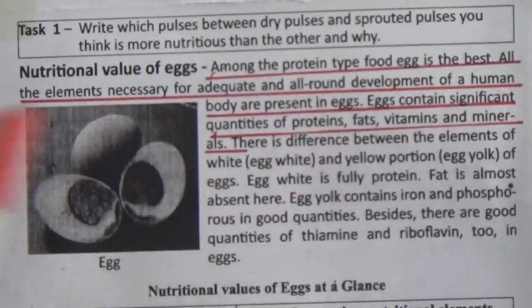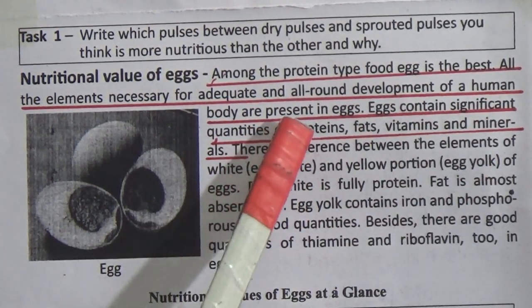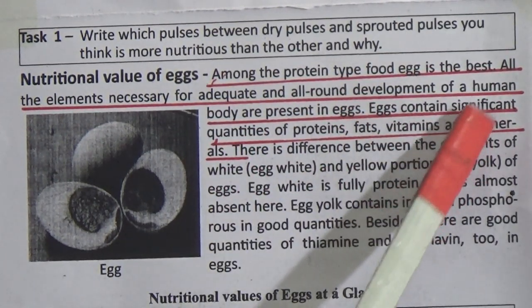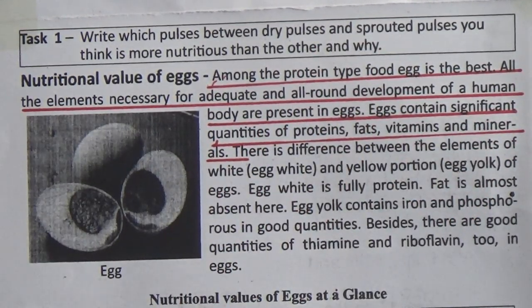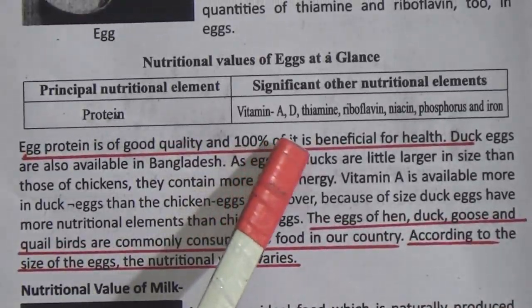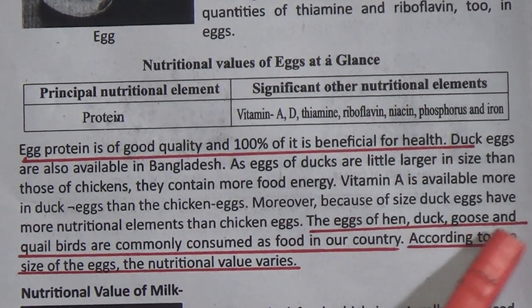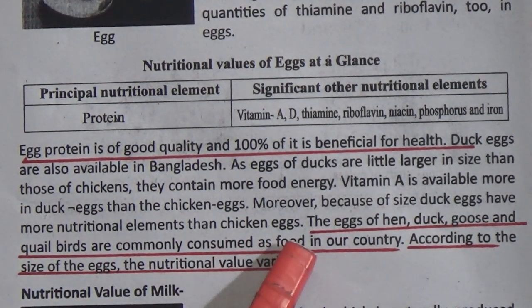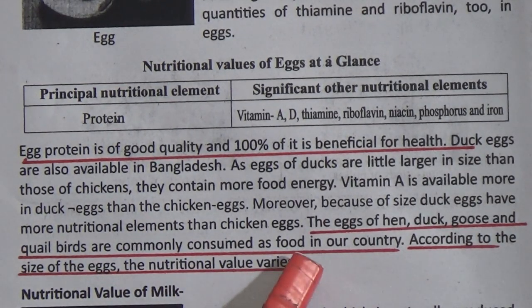Nutritional value of eggs. Among protein type foods, egg is the best. All the elements necessary for adequate and all-around development of a human body are present in eggs. Eggs contain significant quantities of proteins, fats, vitamins, and minerals. Egg protein is of good quality and 100 percent of it is beneficial for health. The eggs of hen, duck, goose, and quail are commonly consumed as food in our country. According to the size of the eggs, the nutritional value varies.